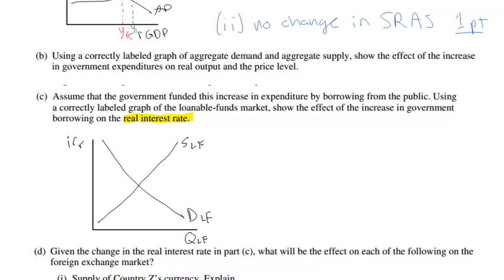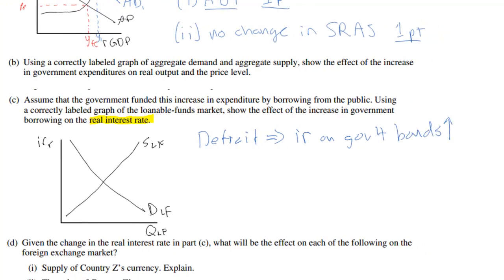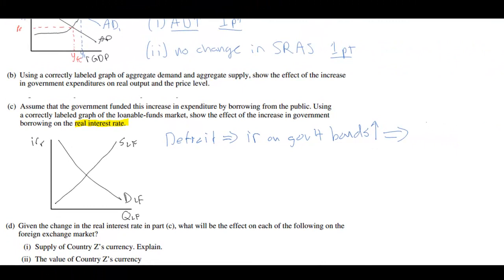There are a couple of ways to illustrate this, but I'm going to use the simplest. The deficit leads to an increase in the interest rate on government bonds. Bonds are how governments borrow money — if they need to borrow to pay for a budget deficit, they must raise the interest rate on bonds to make them more attractive to investors. As the interest rate on government bonds increases, fewer people will be willing to save their money in the private banking system, so the supply of loanable funds decreases.